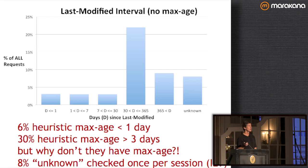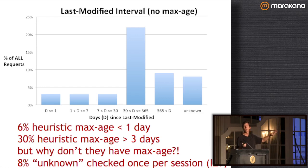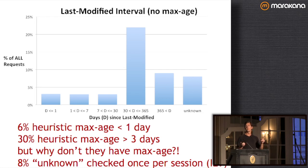You're going to get some caching behavior anyway — it's just that you don't know what it's going to be. It's up to the whim of whatever cache has been implemented. It would be much better, since you're going to get some caching behavior, to be very explicit: if you want your stuff cached, specify how long; if you don't want it cached, specify no-cache.